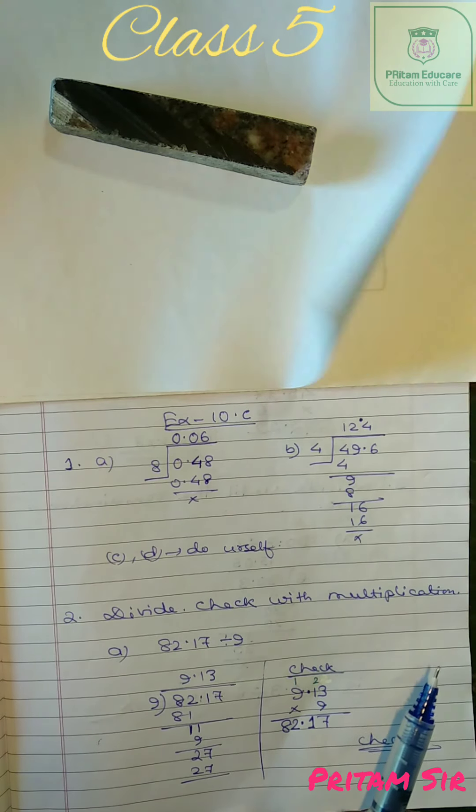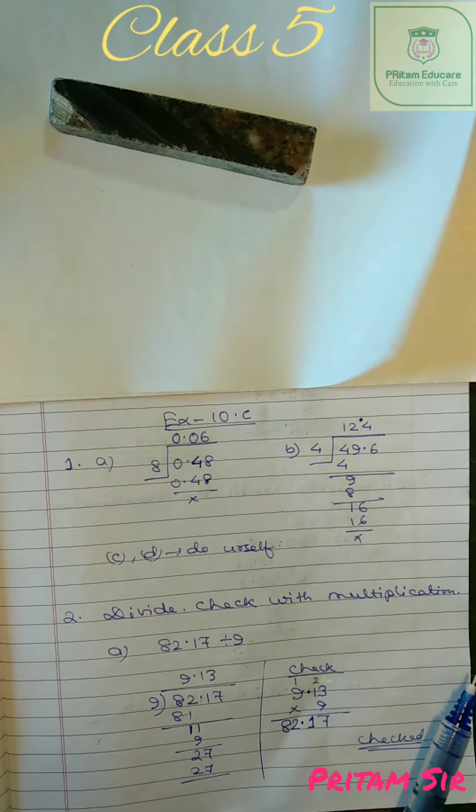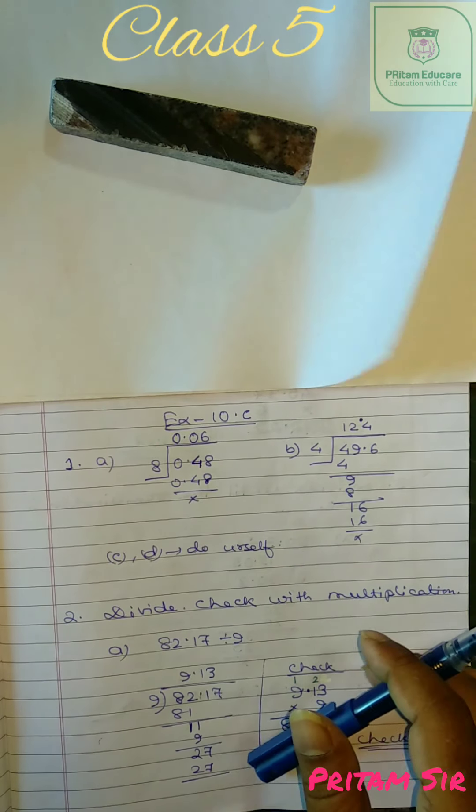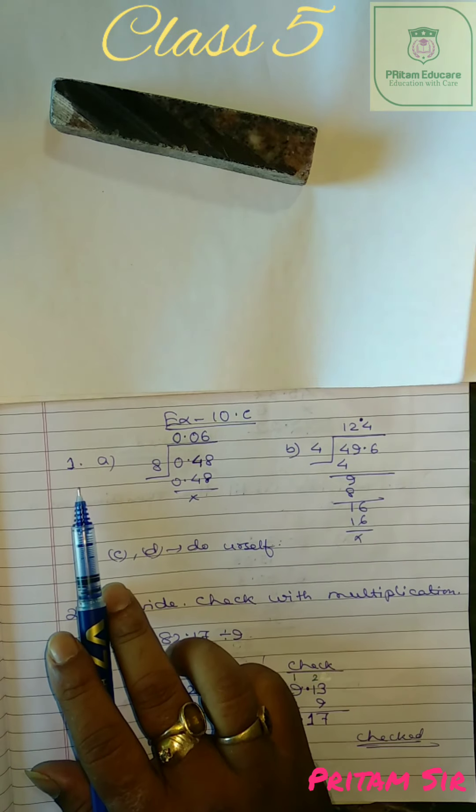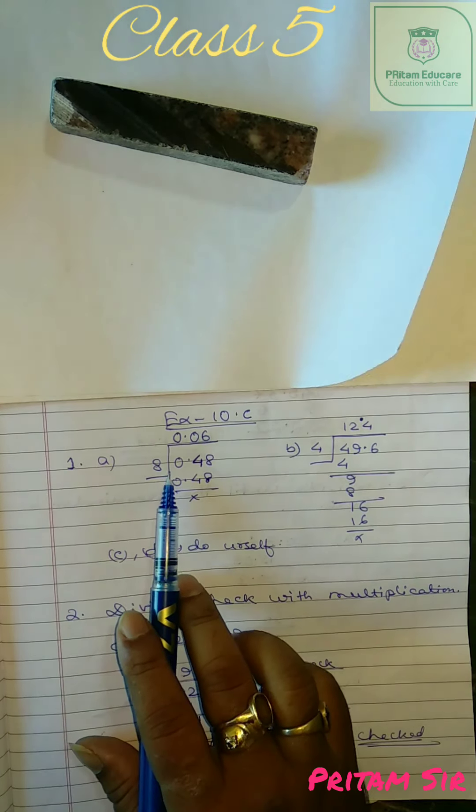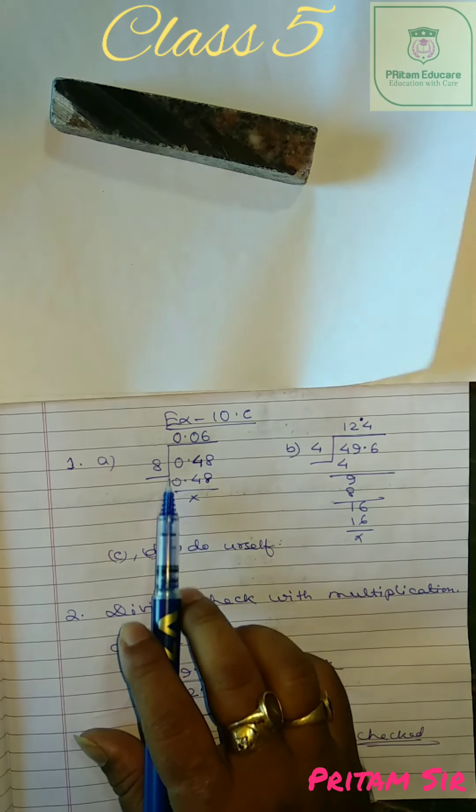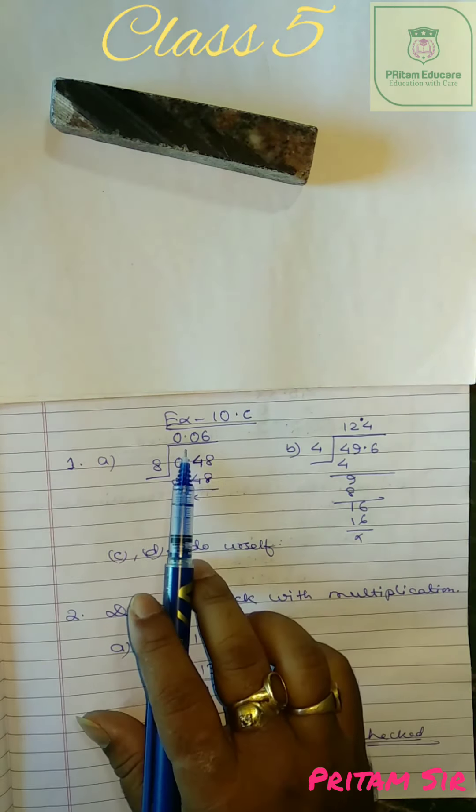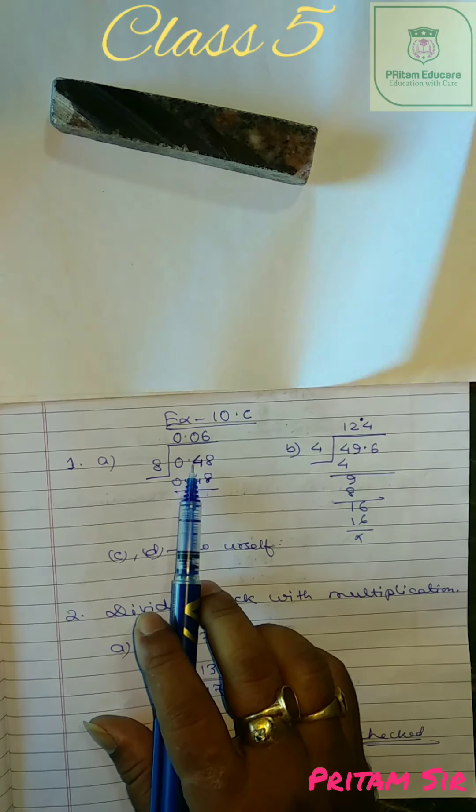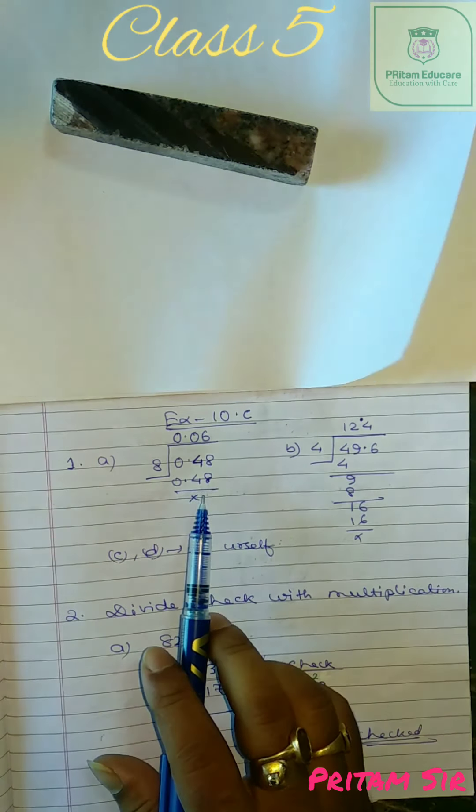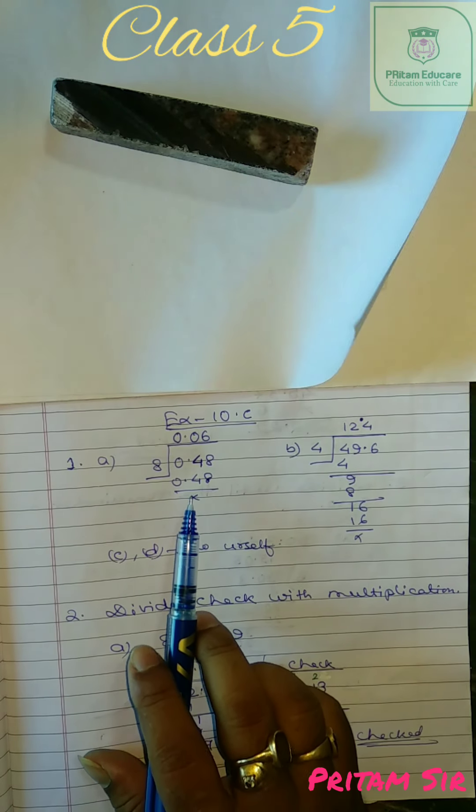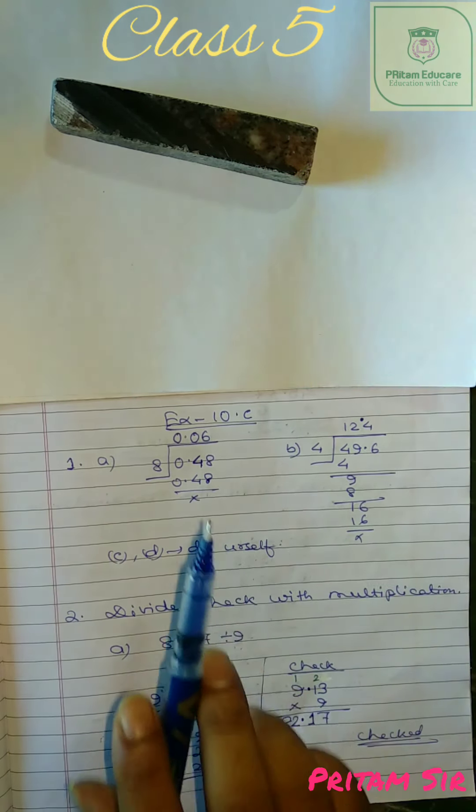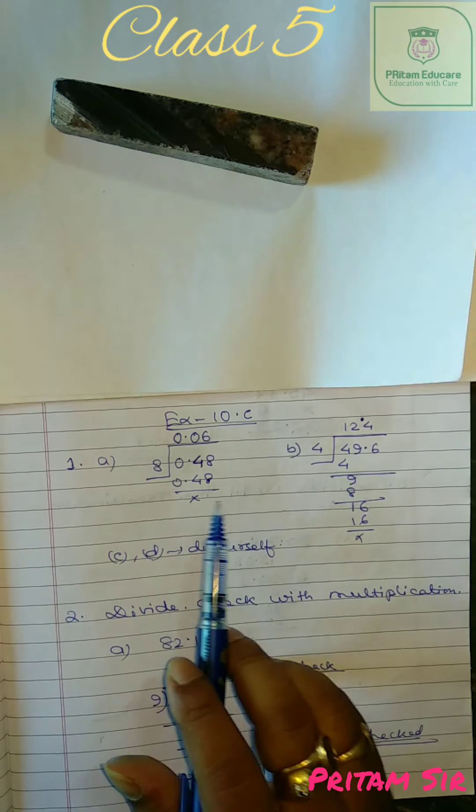Already in exercise 10b last two questions were on divisions. Here this exercise is completely on division. So what is given? 1a. The format is given 0.48 divide. It is given already 0.06. You have to place the decimal point correctly in this question.